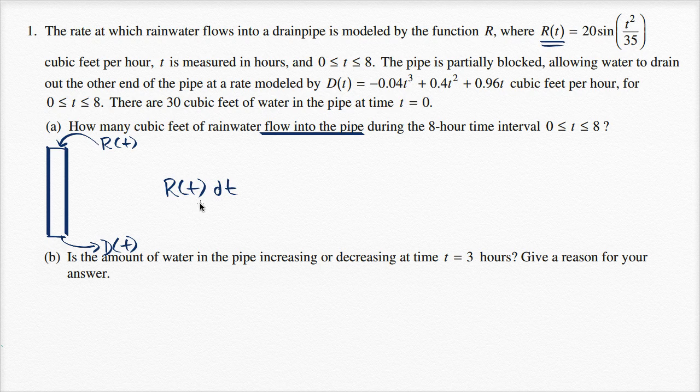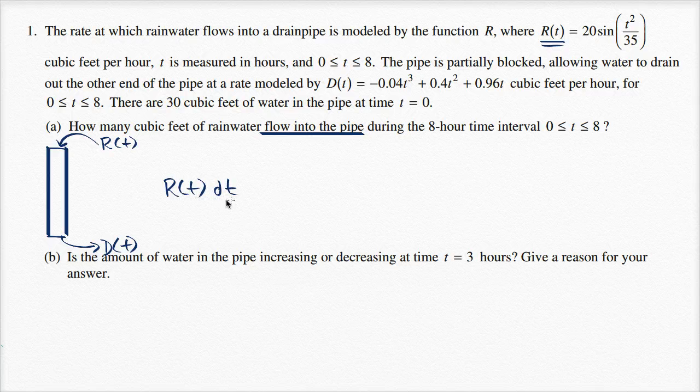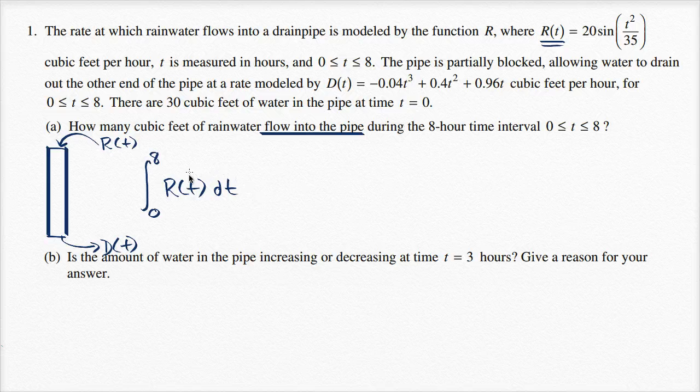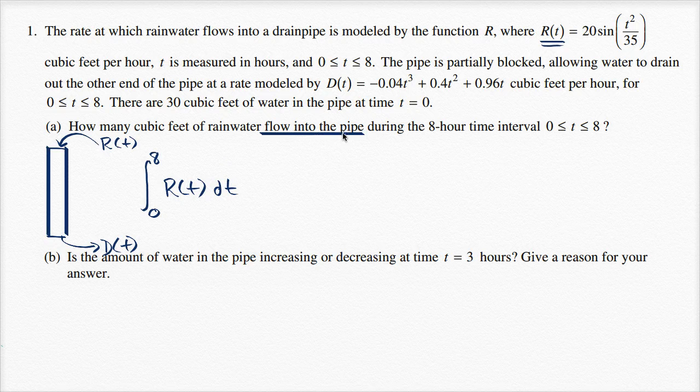This is the amount that flows in over that very small change in time. And so what we want to do is we want to sum up these amounts over very small changes in time to go from time equals zero all the way to time equals eight. So this expression right over here is going to give us how many cubic feet of water flow into the pipe.